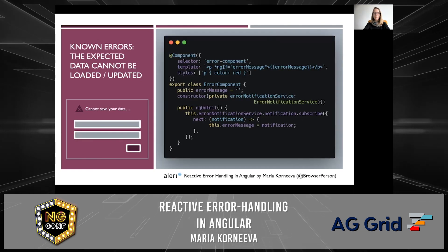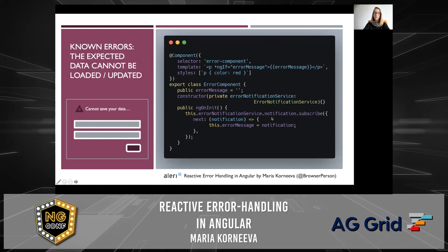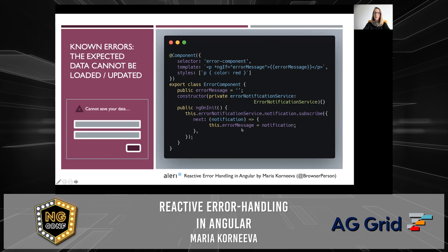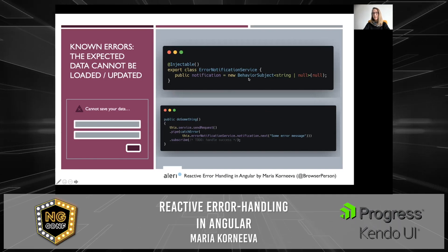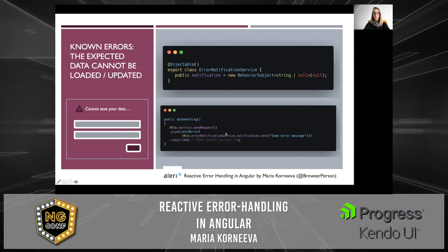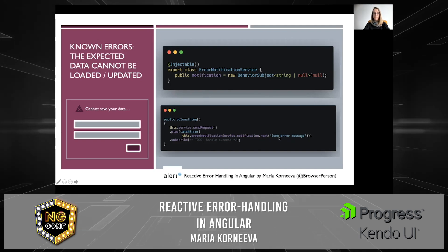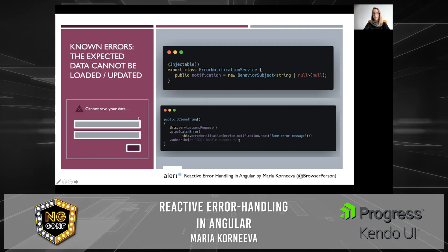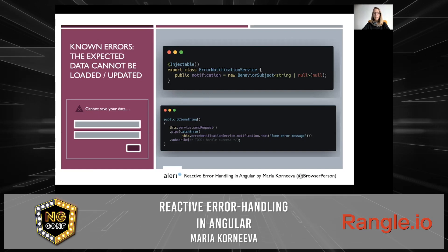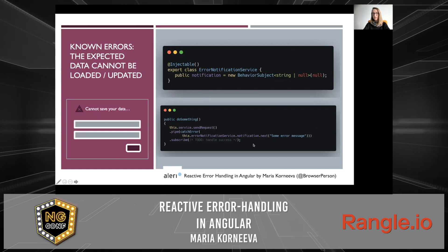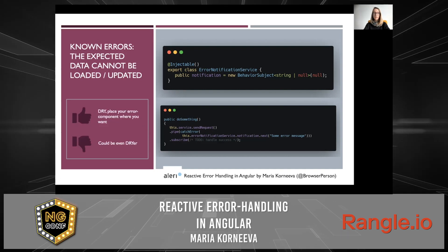So let's have a look at a different solution. We can put our error message in a separate component — an error component — which is just a red text, and subscribe to the error notification service. Then we can just display whatever we get from the service in our component. Our error notification service is just a simple BehaviorSubject. And in our service, we can just call next on this notification and provide the specific error message, which will then be displayed in our error component. With this solution, you can be very specific about your requests. However, imagine if you also have to log and track your errors — you will repeat this part of your code over and over again.